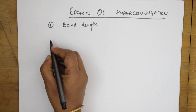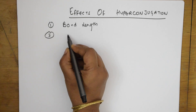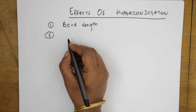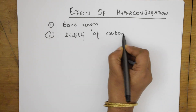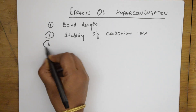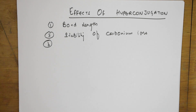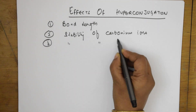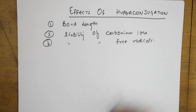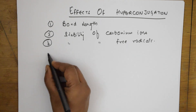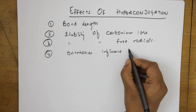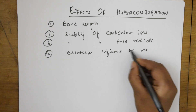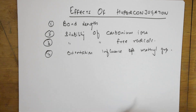I will also use this concept of hyperconjugation in explaining dipole moment. I'll be explaining the concept of hyperconjugation in stability of carbonium ions. Then I'll be teaching you how we can study this hyperconjugation concept in stability of free radicals. I'll also be teaching you the concept of orientation influence of methyl group — all under these headings.